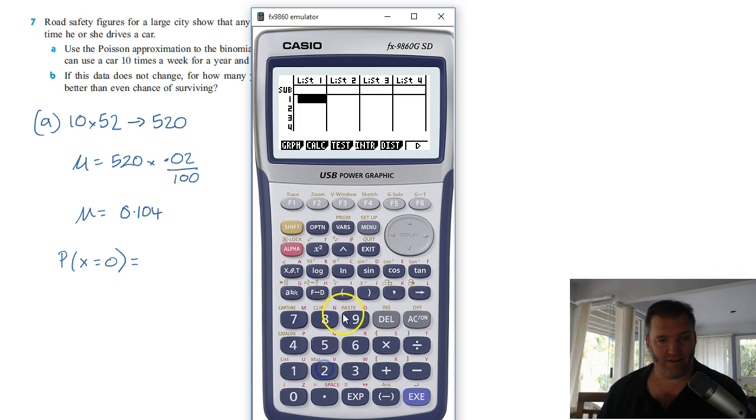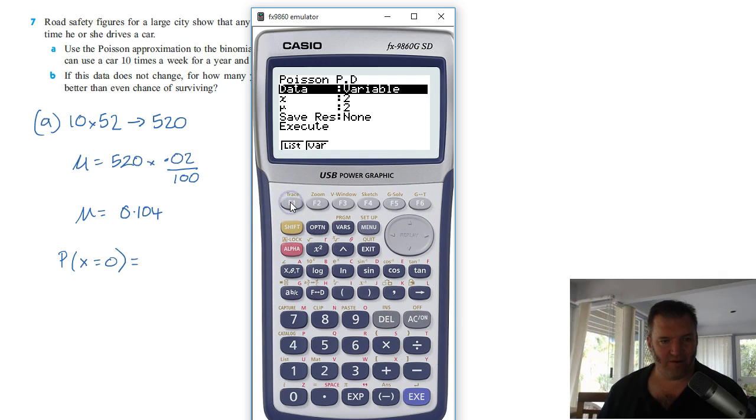So, over to stats, Poisson distribution. Oops, distribution first. Knucklehead. There we go. Poisson, one specific value here.